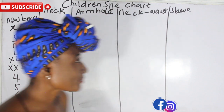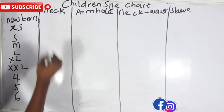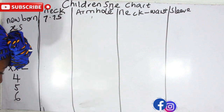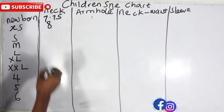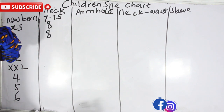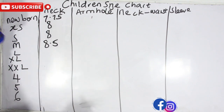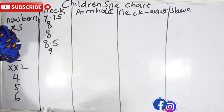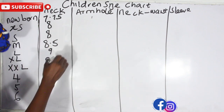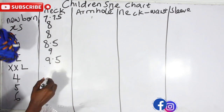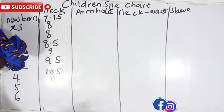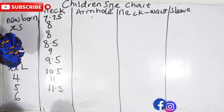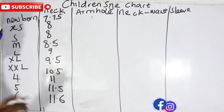So for our neck measurements: for a newborn we have 7.75 inches; for extra small we have 8 inches; for small we have 8 inches; for medium we have 8.5 inches; for large we have 9 inches; for extra large we have 9.5 inches; for extra extra large we have 10.5 inches; for size four we have 11.5 inches; for size five we have 11.5 inches; and for size six we have 11.6 inches.